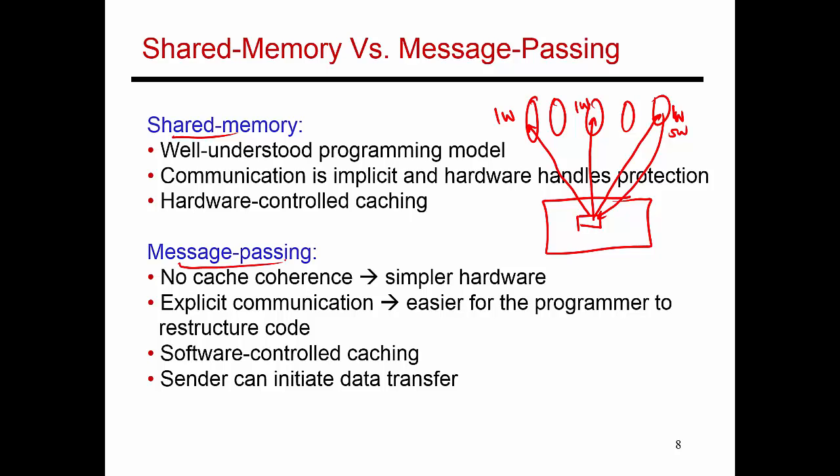The second approach is referred to as message passing, where again, you take an application and break it up into multiple threads. The key difference here is that each thread has its own private pool of memory, and this private pool of memory is not visible to any of the other threads. When this thread does a load, it has to produce an address that is sitting in its own local memory, so that load can only retrieve a value from here and place it into a register.